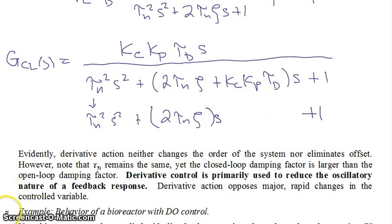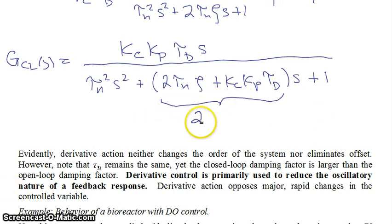If we work this out, what you end up getting is that this now wants to be equal to 2 times tau n, the new tau n, which is actually the same as the old tau n, because the s squared term is the same, so you have the same tau n as before, times zeta closed loop. So if we work this out, then zeta closed loop is equal to our old zeta plus this new term, kc, kp, tau d over 2 tau n.